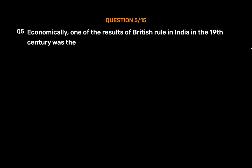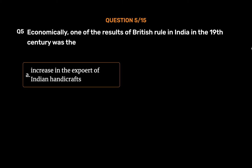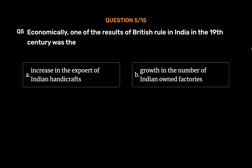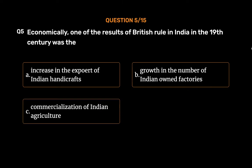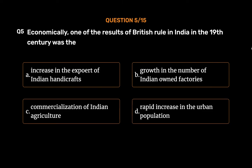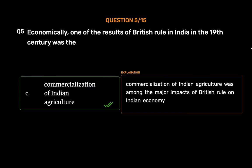Question No. 5. Economically, one of the results of British rule in India in the 19th century was the: Option A: Increase in the export of Indian handicrafts. Option B: Growth in the number of Indian-owned factories. Option C: Commercialization of Indian agriculture. Option D: Rapid increase in the urban population. The correct answer is Option C: Commercialization of Indian agriculture, which was among the major impacts of British rule on the Indian economy.